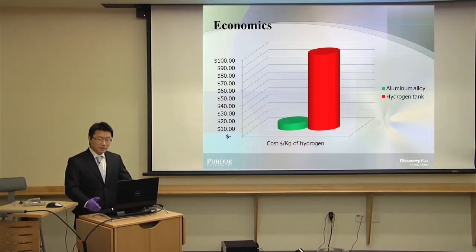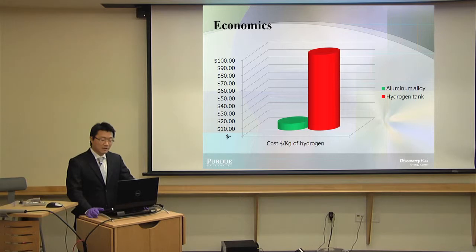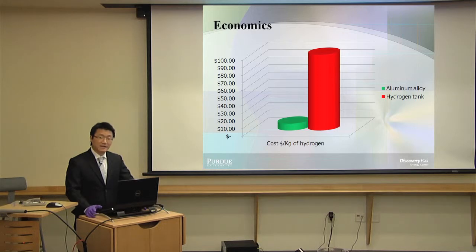What we would like to do is substitute this hydrogen tank with our system. We did some calculation. The current market shows that hydrogen stored in a hydrogen tank costs $100 per kilogram. We can generate the same amount of hydrogen with our system using the aluminum alloy at $9, which is almost 10 times cheaper.